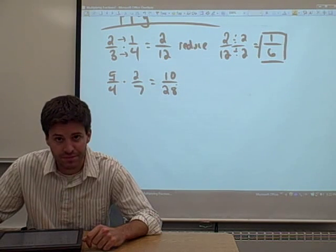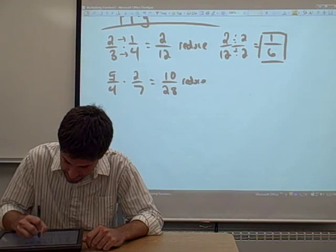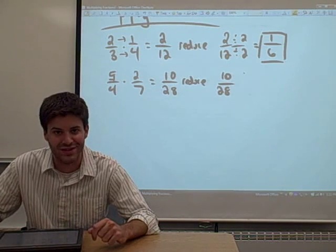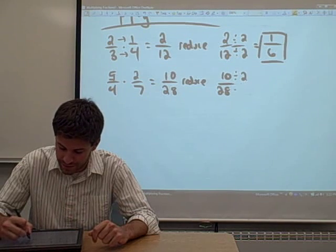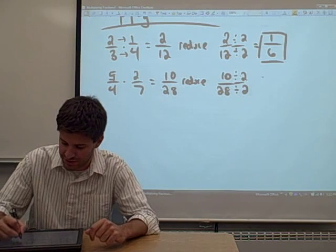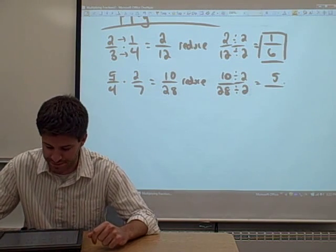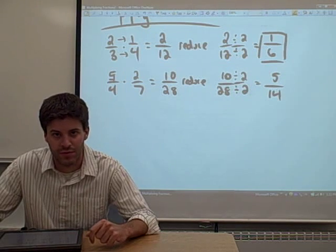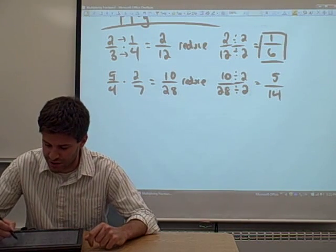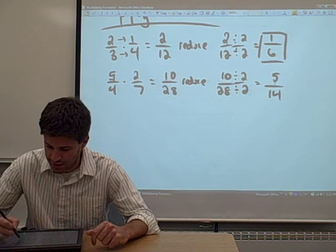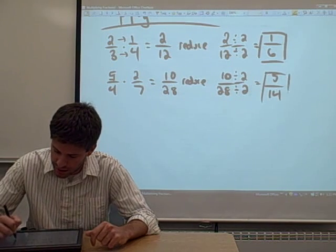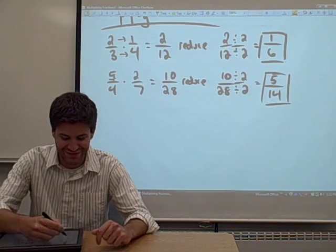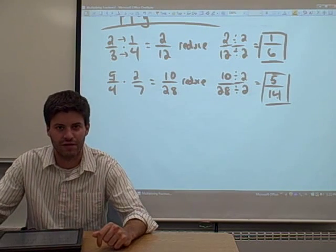Then we have to reduce. You might notice that ten over twenty-eight is not in lowest terms. Ten and twenty-eight can both be divided by two. You take ten divided by two and you get five. You take twenty-eight divided by two and you get fourteen. Is five fourteenths in lowest terms? Well, five can only be divided by five and one, and fourteen can't be divided by five. So that answer is actually in lowest terms — five fourteenths. So five fourths times two sevenths equals five fourteenths.